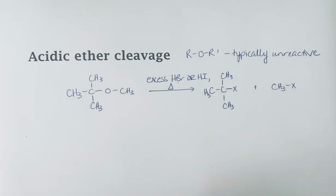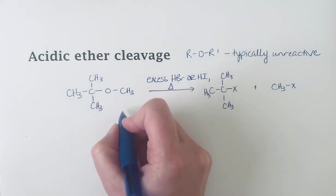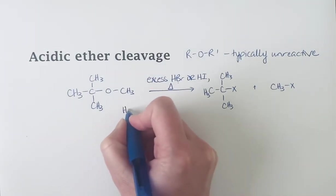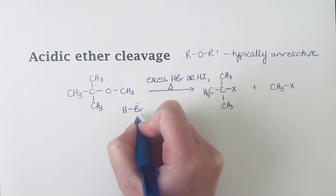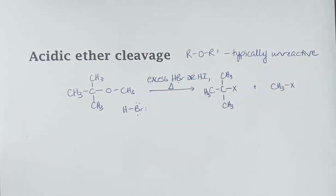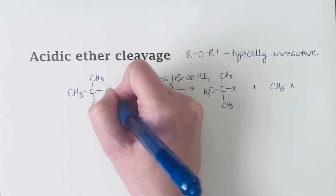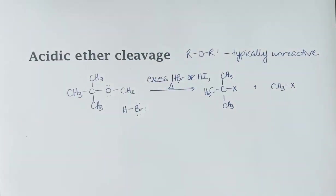And so how this reaction works, let's just say, for example, let's do this with HBr. So HBr is a strong acid, and of course the oxygen with its lone pairs of electrons can act as a base.